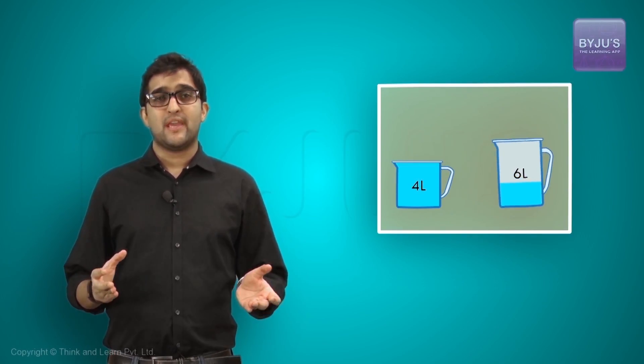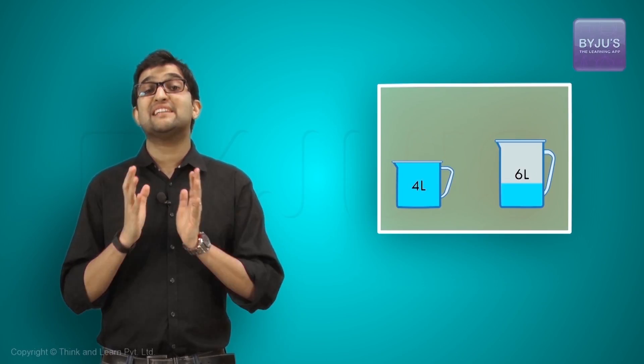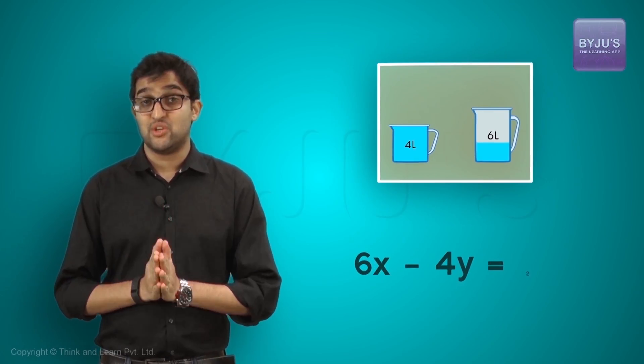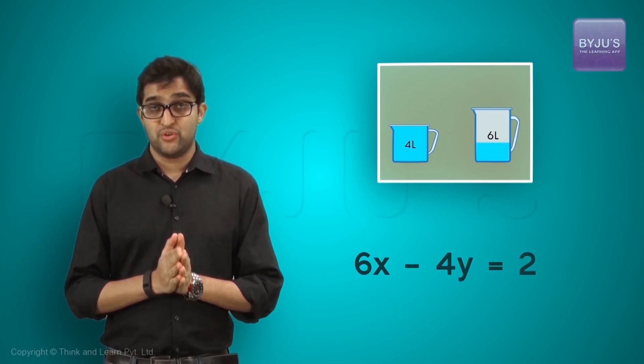If I mathematically write it or mathematically model it using linear equations, I get the equation as 6x minus 4y is equal to 2. You know x equal to 1 and y equal to 1 is a solution.